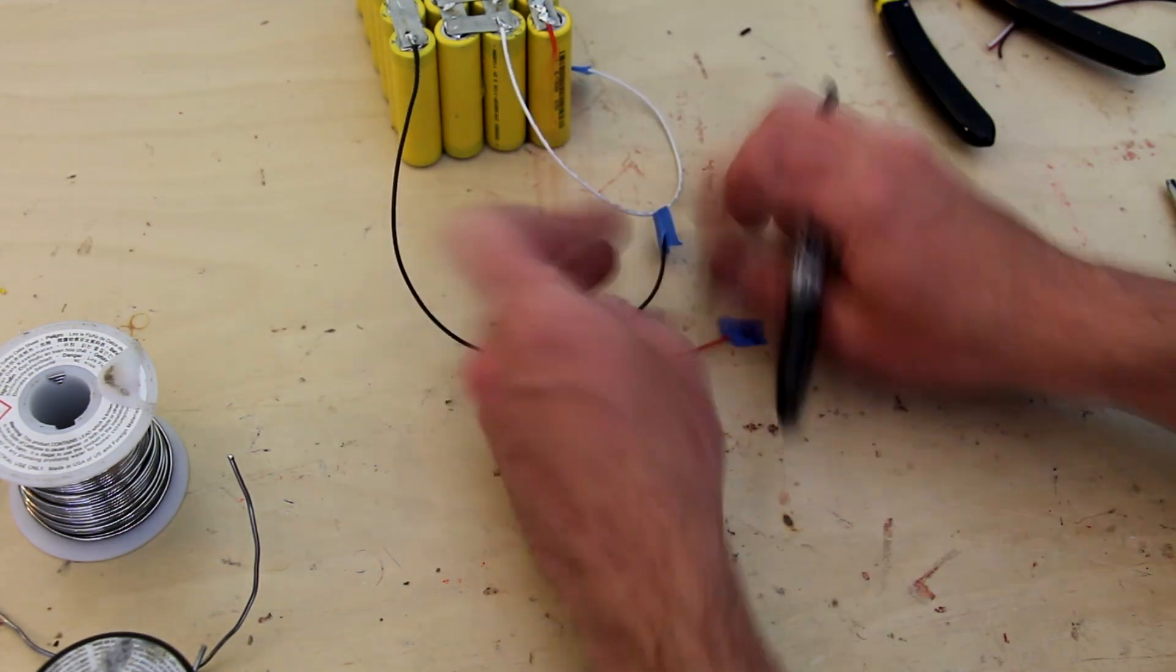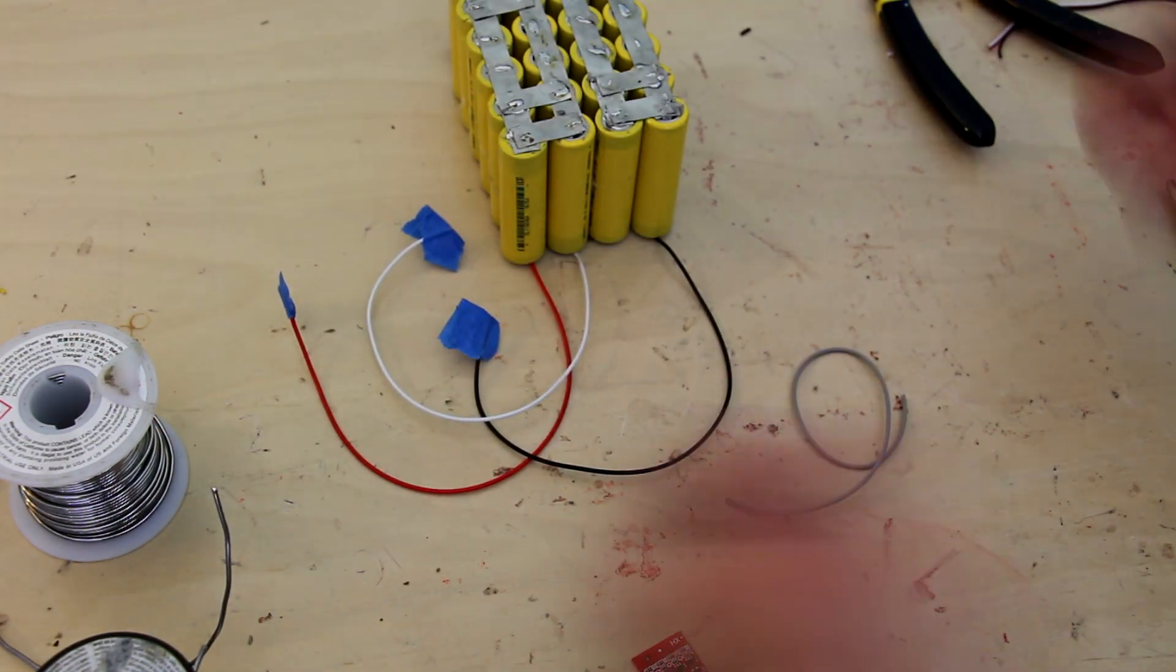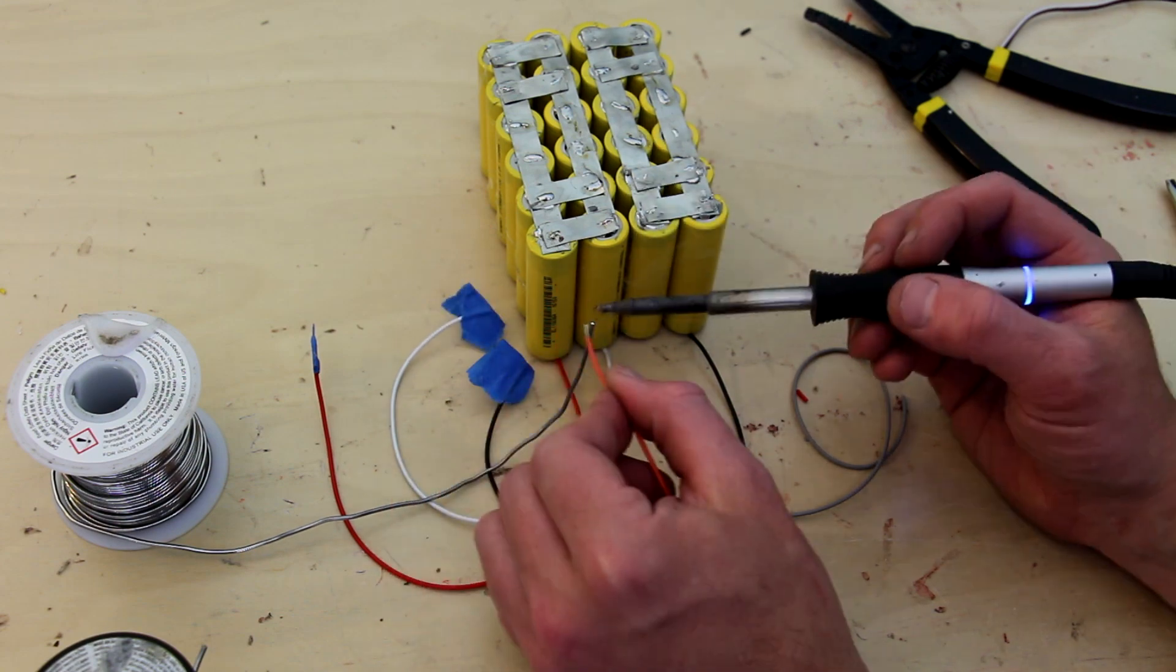The red wire, that is my positive lead, goes to B+, or in this case on this BMS system is called B4. The black is B- or B0.